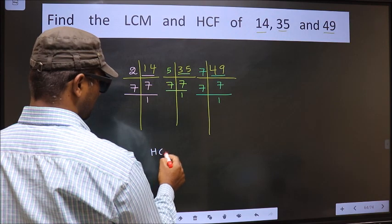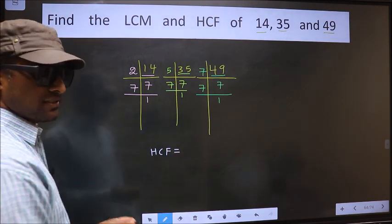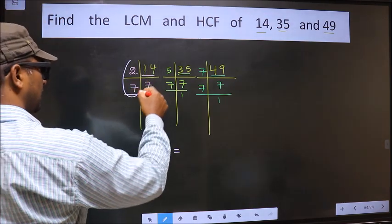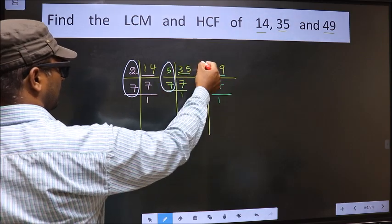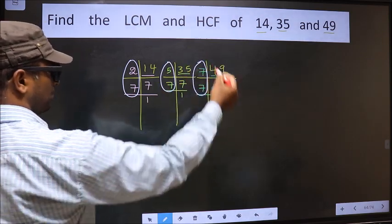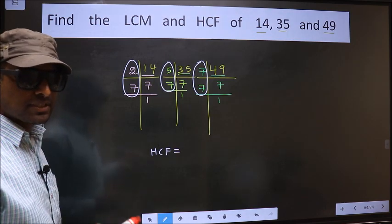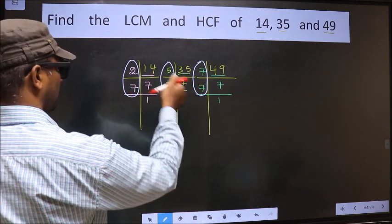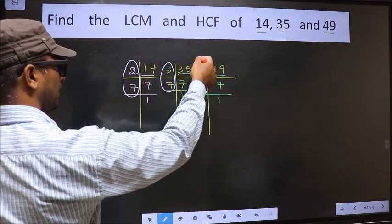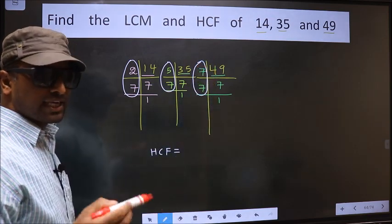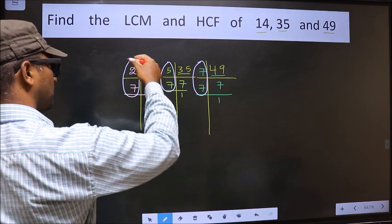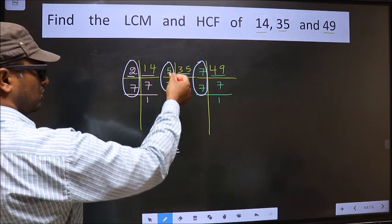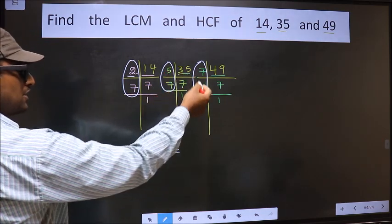So now our HCF is the product of numbers which should be present over here, and here, and also here. I repeat, HCF is the product of numbers which should be present in these 3 places. So now, let us find the numbers which are present here, here, and also here. Starting with the number 2. Do we have 2 here? No. No need to check in the other place.